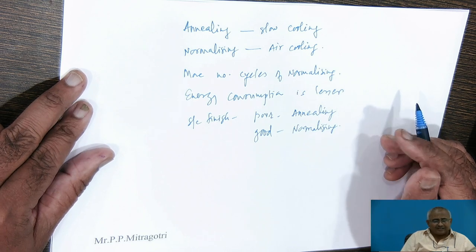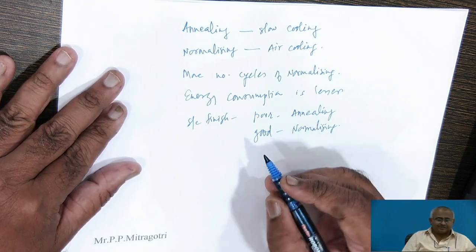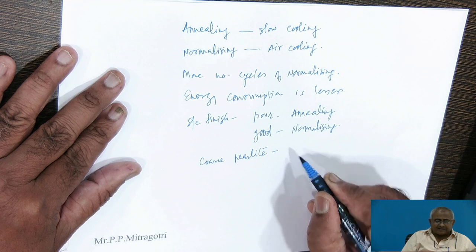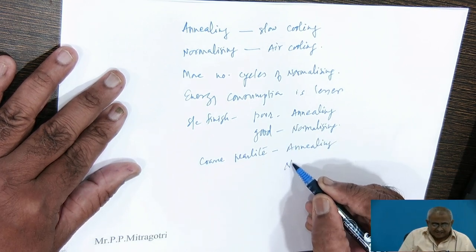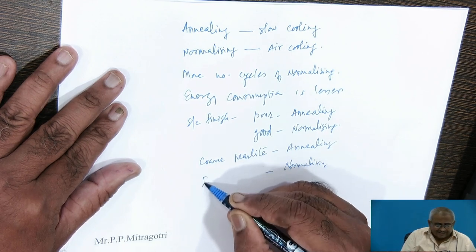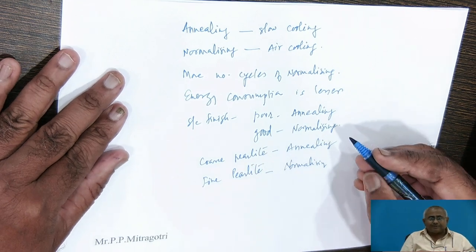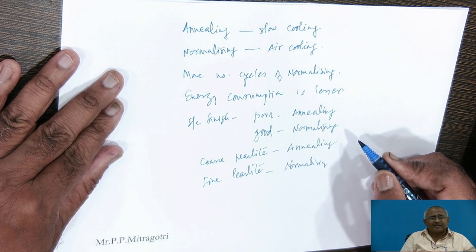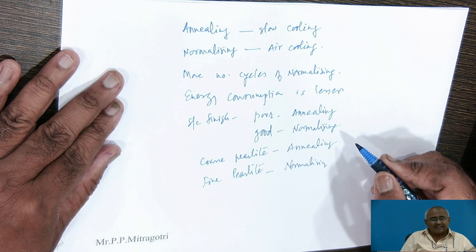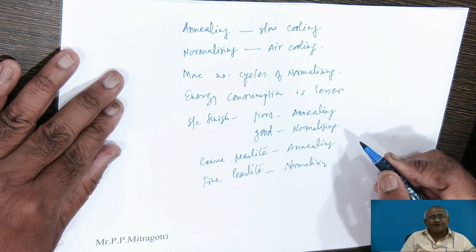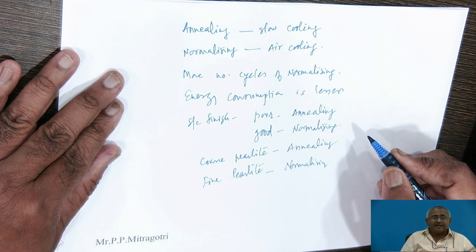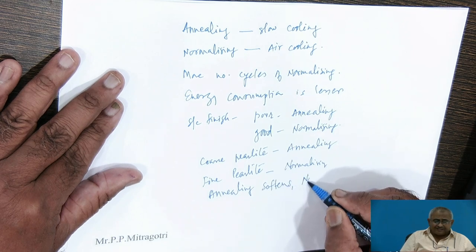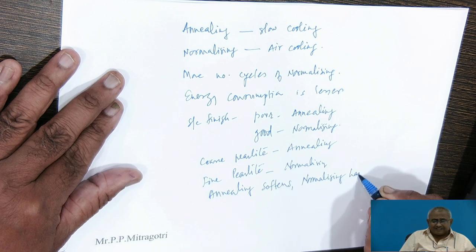The form of pearlite obtained in annealing is coarse pearlite, which results in lesser mechanical properties. The pearlite obtained after normalizing is fine pearlite — the interlamellar spacing between ferrite and cementite is very small. As a result, strength and hardness after normalizing is much better than after annealing. Mechanical property improvement after normalizing is much higher; annealing generally softens the steel while normalizing hardens it to a certain extent.